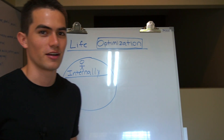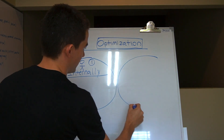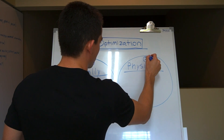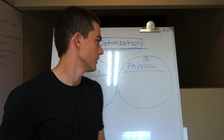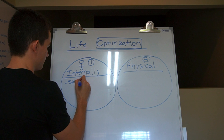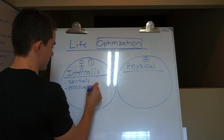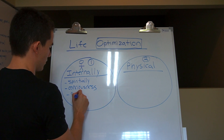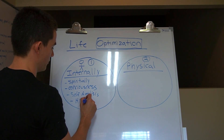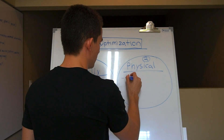This internal aspect is about your spiritual being. So let's write this down: spirituality, whatever religion you believe in, consciousness, self-analysis, and figuring out what the higher being is for you. You can name it Jesus, God, Allah — whatever it is. This is what happens internally.